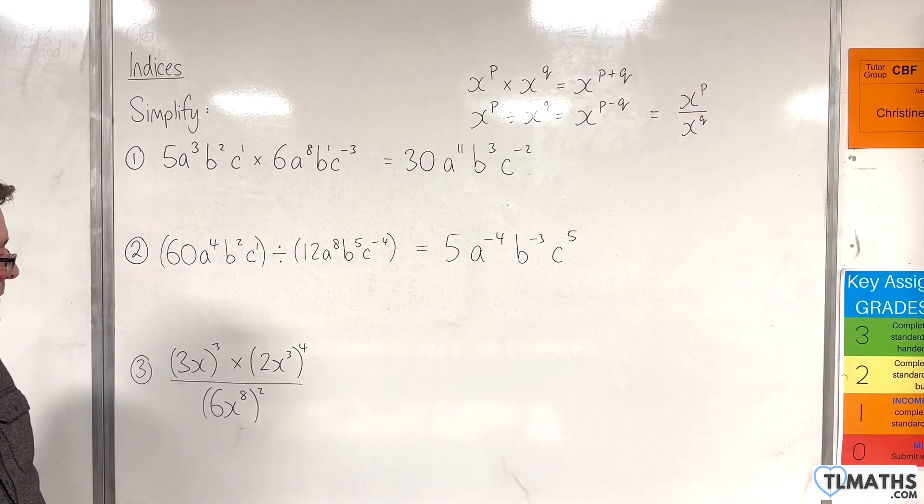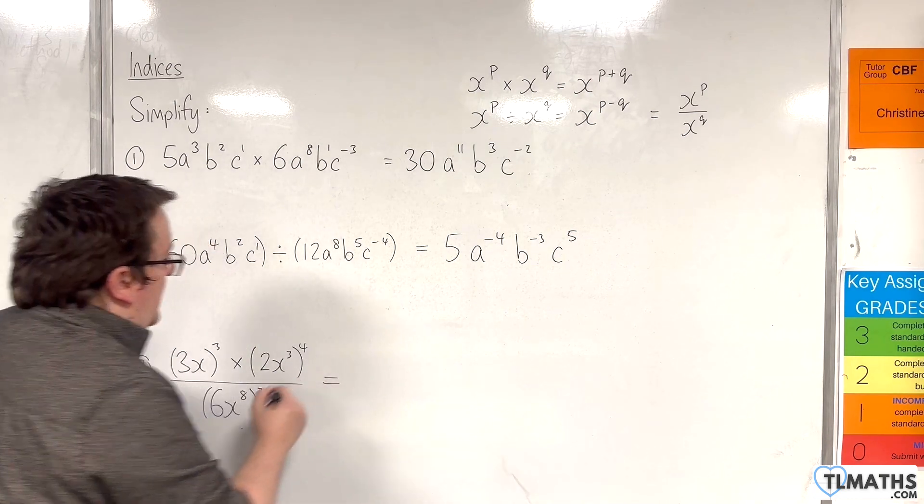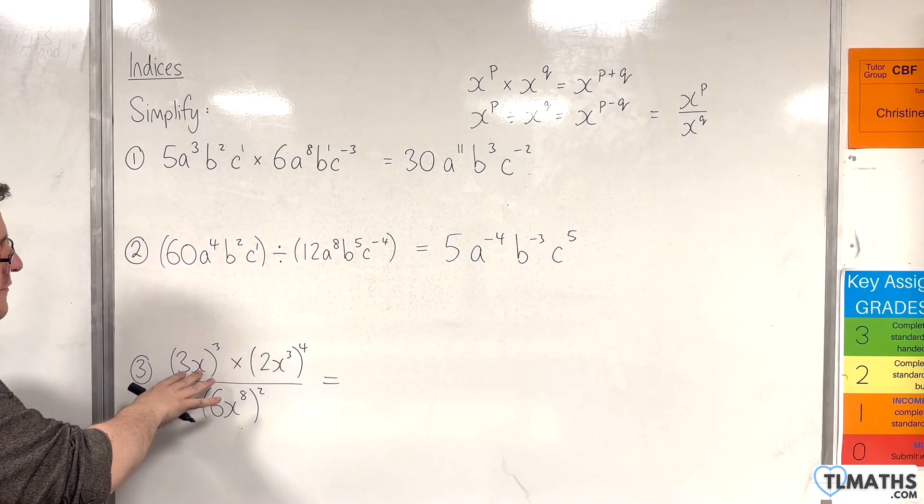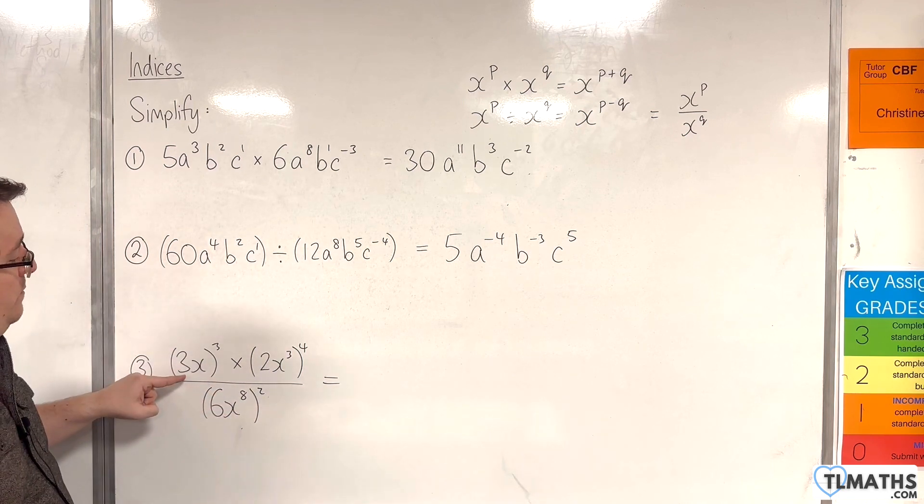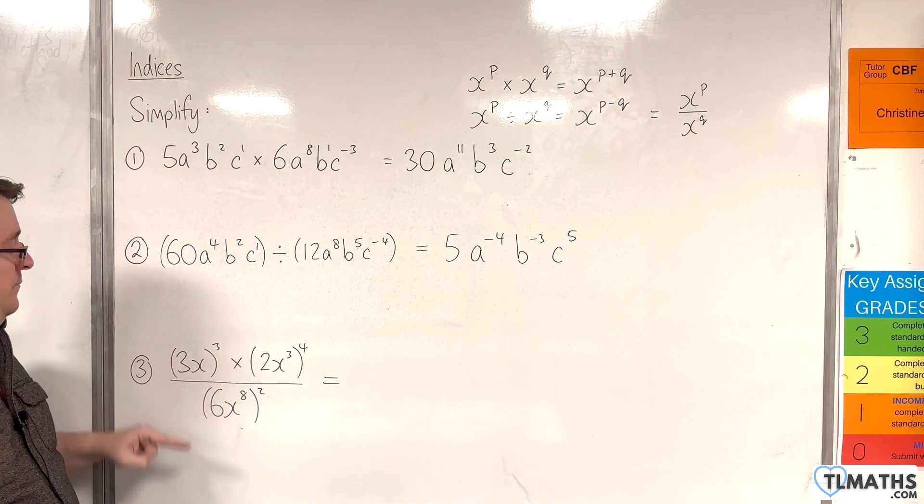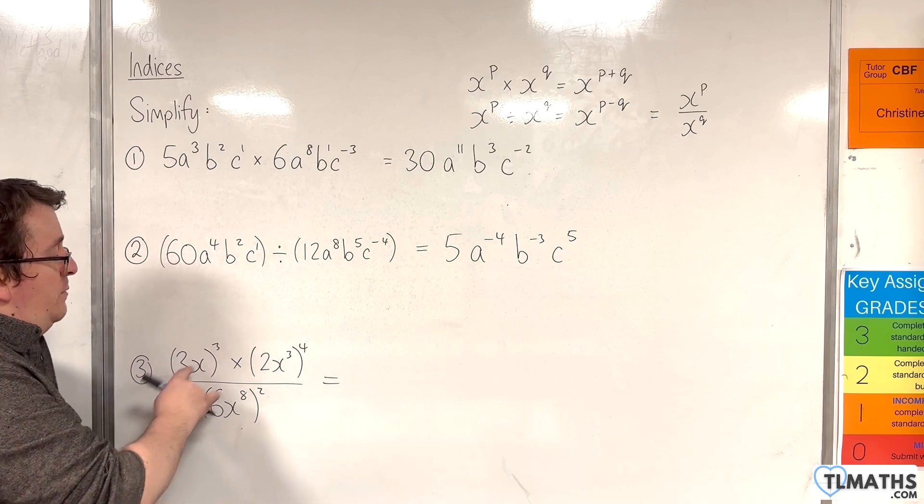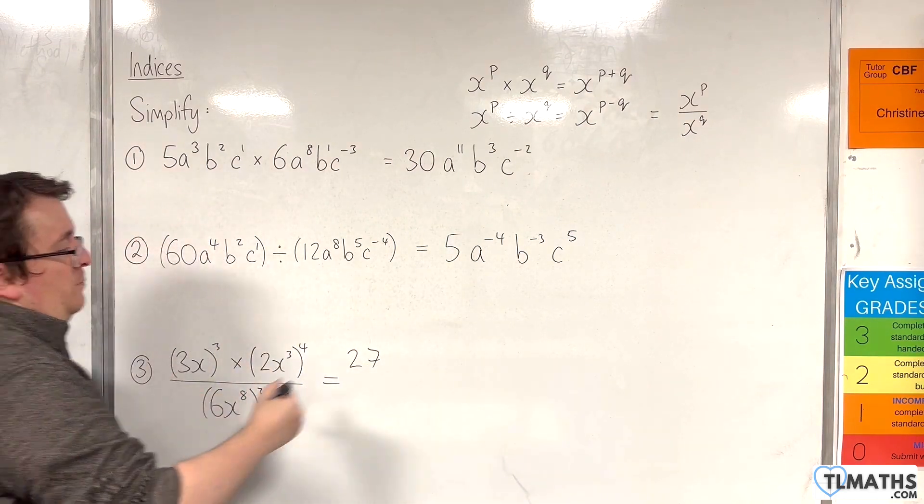Now, for this last example, what you need to look out for is that you need to make sure that when you're evaluating 3x all cubed, you cube the 3 and the x. So this will be 3 cubed, which is 27, x cubed.